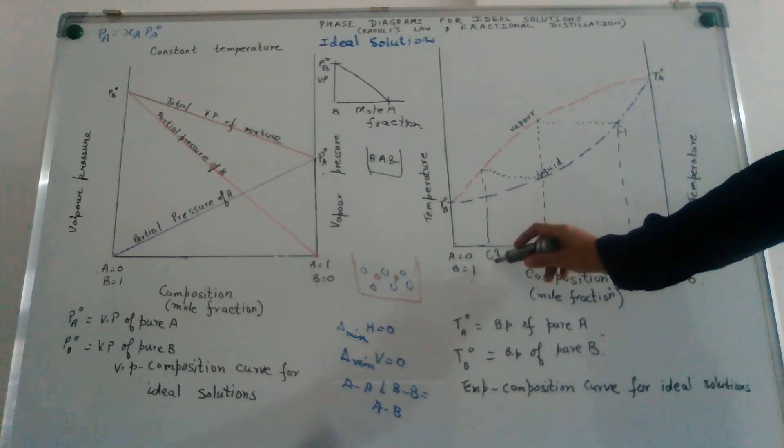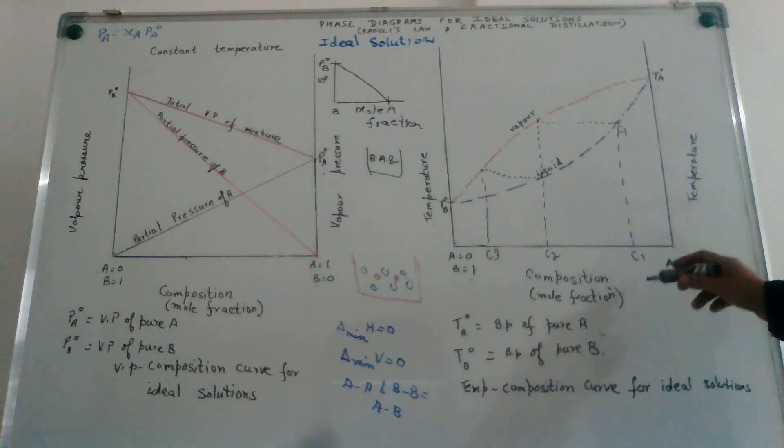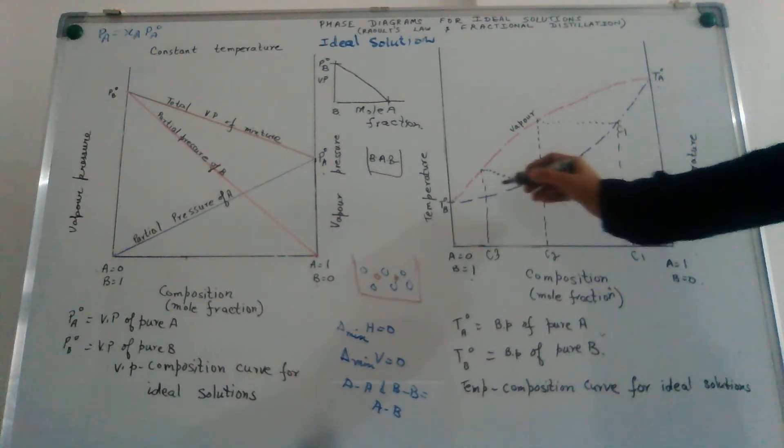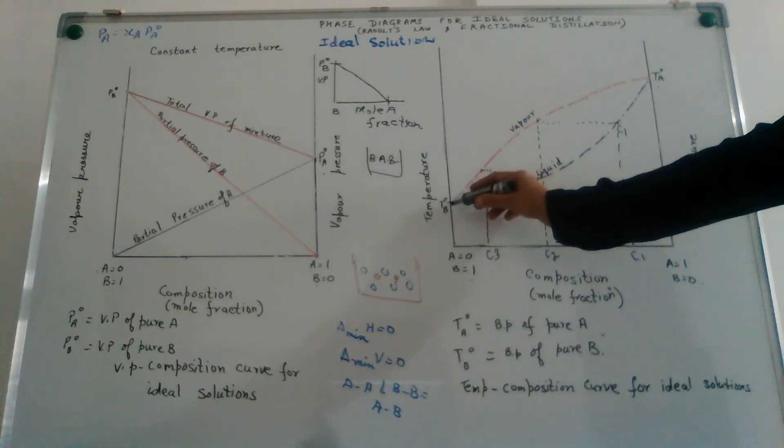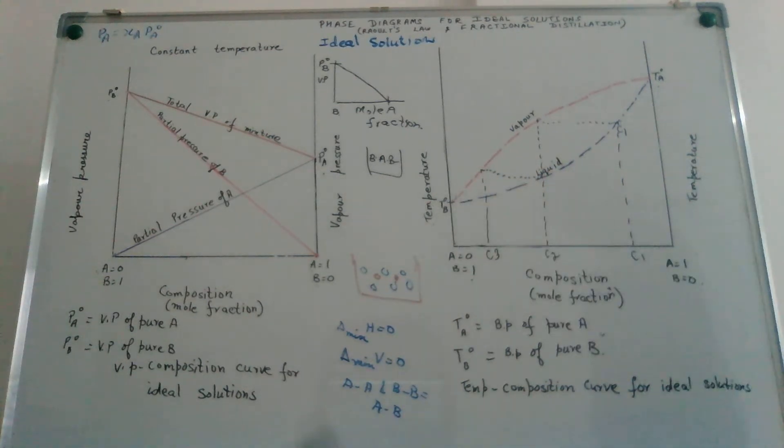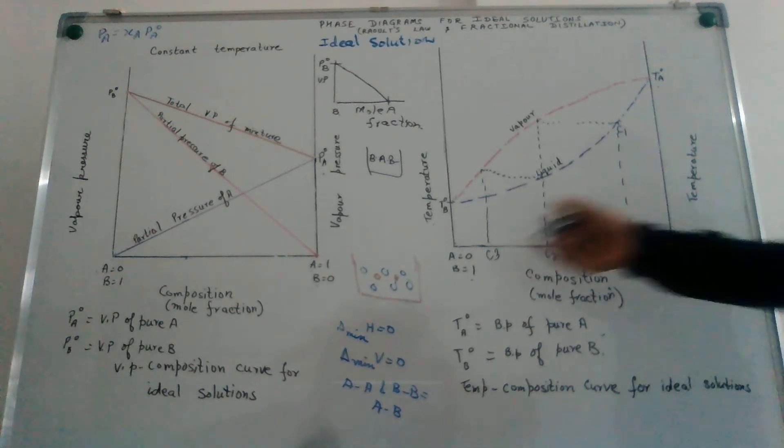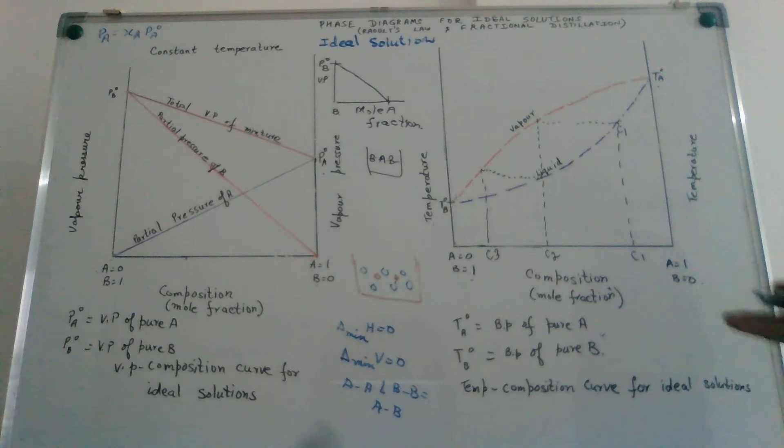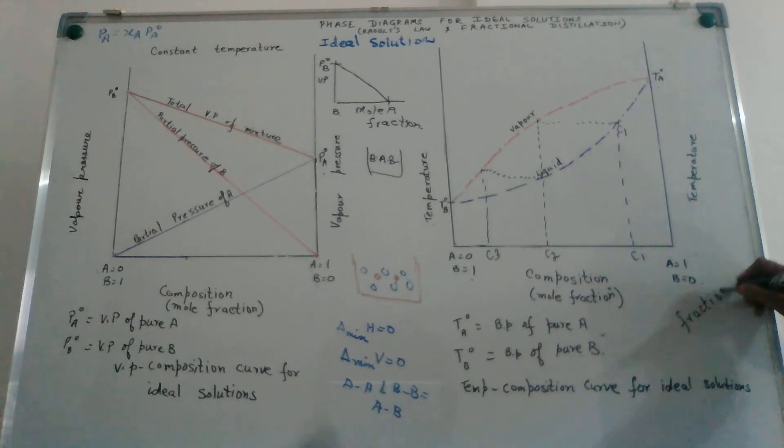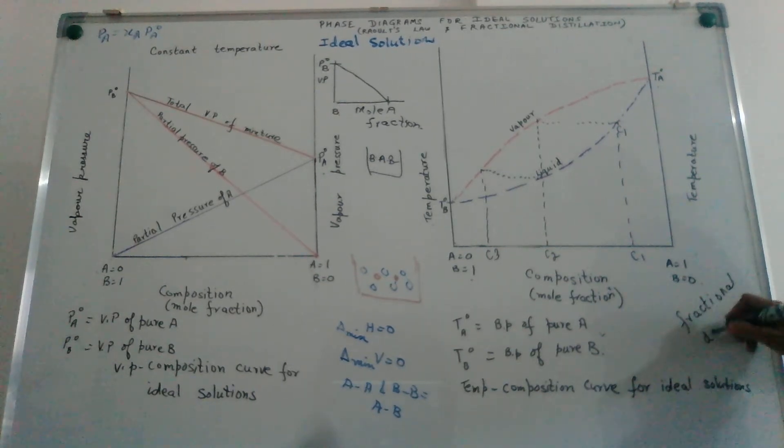We will come to a stage where if I boil it further and condense it, I will get my distillate as only pure B, and what will be left behind would only be pure A. This is the logic we use when we carry out fractional distillation of liquids.